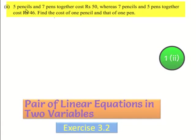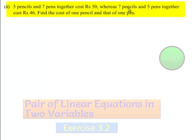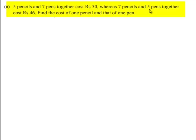Coming to the second problem: 5 pencils and 7 pens together cost 50 rupees, whereas 7 pencils and 5 pens together cost 46 rupees. Find the cost of 1 pencil and that of 1 pen.